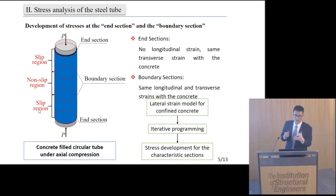To investigate the confinement, we first focus on the stress state of the steel tube. As shown in this figure, for simplification, the steel tube is theoretically divided into two regions: one is the slip region at the column ends, and the other one is the non-slip region at the mid-height.